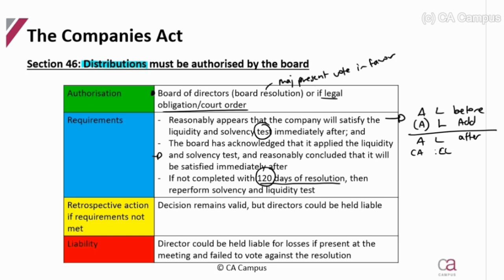The decision remains valid even if the requirements are not met — this is different from other provisions where the decision would be void. However, directors who were present and failed to vote against the decision will be held personally liable.